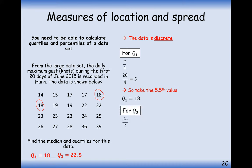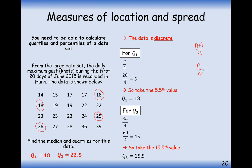For Q3, do 3N divided by four, which gives 15, and then it's in between the 15th and 16th data points — in between 25 and 26 — so Q3 is 25.5. To summarise: for the median it's N plus one divided by two; for the lower quartile it's N divided by four then follow the two rules; and for the upper quartile it's 3N divided by four and follow those rules again.